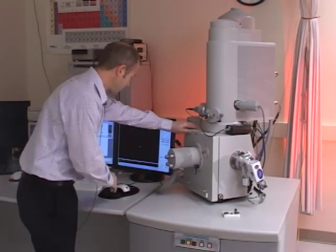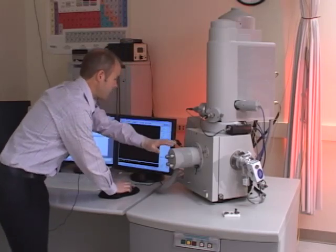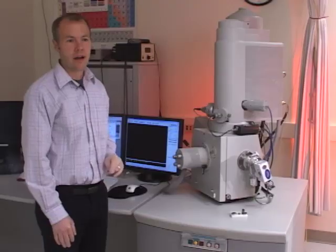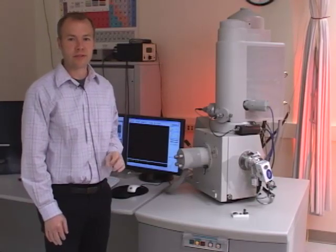Once the chamber door is closed, I'll hold it with one hand and re-engage the pump. It takes about two minutes before it reaches vacuum. At that time we can open the column valve and actually view the sample.